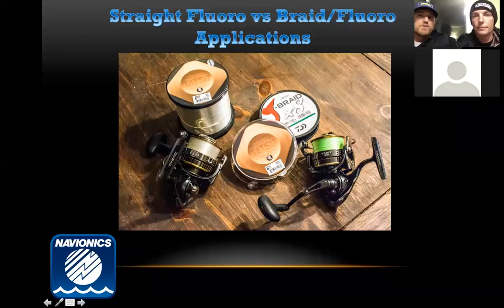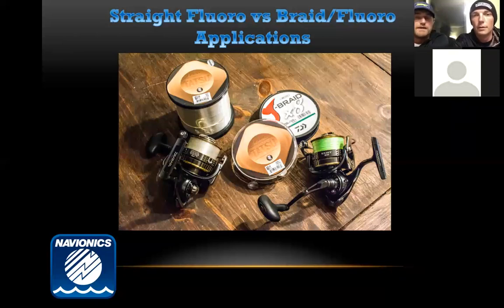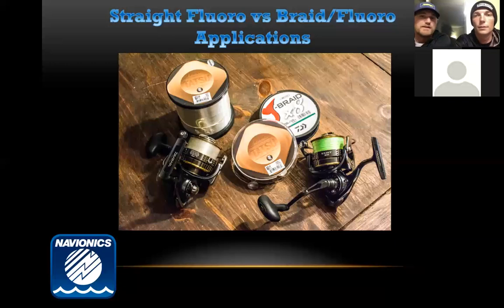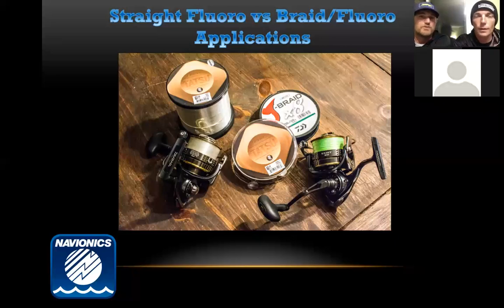There are a lot of good reasons to use braid to fluorocarbon. Line twist is going to be a big one — when you're vertical dropping, you tend to get a lot of twist with straight fluorocarbon. You're also going to minimize stretch by using braid, and you can use a lighter rod that'll really bow up on that fish. Better castability too. On a big drift, that braid really comes in key when you've got a fish way out there and need to set the hook from far — you'll really appreciate those no-stretch attributes, while the fluorocarbon keeps a close-to-invisible presentation.